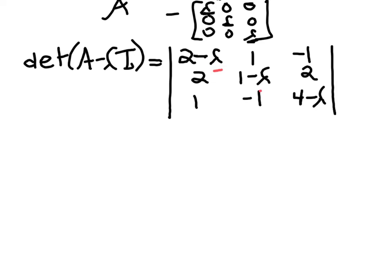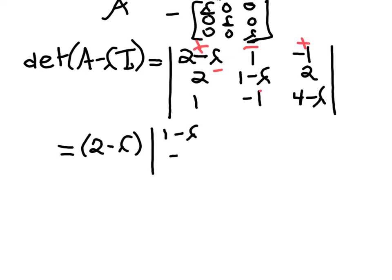If you can pick a row or column that has a zero, that's always nice, but this one doesn't have any. So I'm going to expand along the first row, as that tends to be most natural. Don't forget to alternate signs. So this equals positive (2 minus lambda) times the determinant of the 2 by 2 when we delete that column and row — so the determinant of: 1 minus lambda, negative 1, 2, and 4 minus lambda.